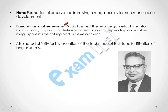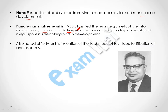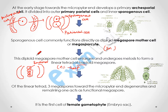If the formation of the embryo sac takes place from a single megaspore, it is termed monosporic development. If two megaspores are involved it is called bisporic, and if four megaspores are involved it is called tetrasporic. As in this diagram, only the single megaspore is involved in the formation of the embryo sac.